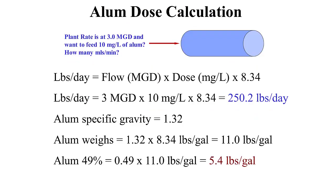You're working at a plant and the computer system is down, and you have to manually set the alum feed pump to feed 10 milligrams per liter of alum at a plant operating at 3 million gallons per day. How do you know how many milliliters per minute you need to feed? Write down the formula: pounds per day equals flow in MGD times mg/L times 8.34. Plugging in a flow of 3 MGD and a dose of 10 mg/L, we get a 250 pounds per day feed rate. The 250 pounds per day applies to any treatment chemical at 3 MGD and a dose of 10 mg/L.